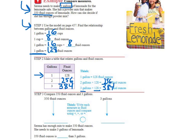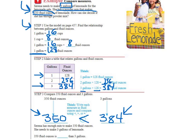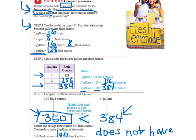So we're going to think what we need. She has the powder mix that makes 350. So that's what she has. She needs three gallons, which we said was 384 ounces. So here's what she has, here's what she needs. Does she have enough? No, because 384 is greater than what she has, the 350. So 350 fluid ounces is less than three gallons. So Serena does not have enough mix to make three gallons of lemonade.